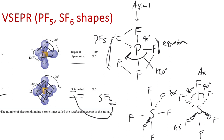It's important to connect 'octa' to the shape, not the count of fluorines. Similarly, 'tetrahedral' comes from the four-sided pyramid shape, not from four atoms attached to carbon. Octahedral domain geometry is adopted by anything with six total domains about a central atom.